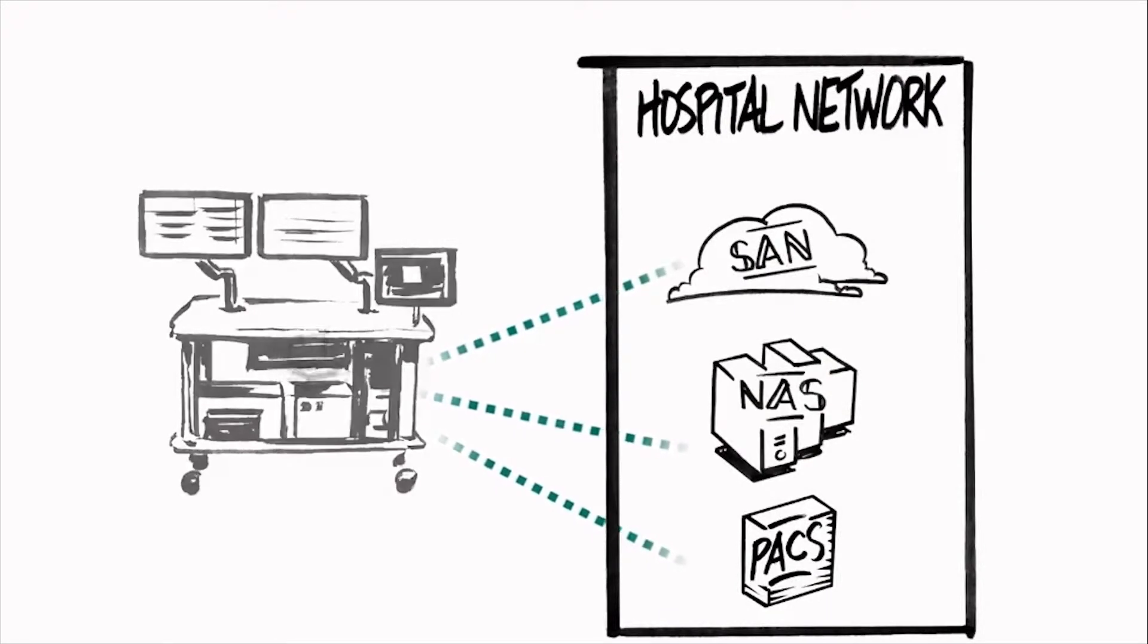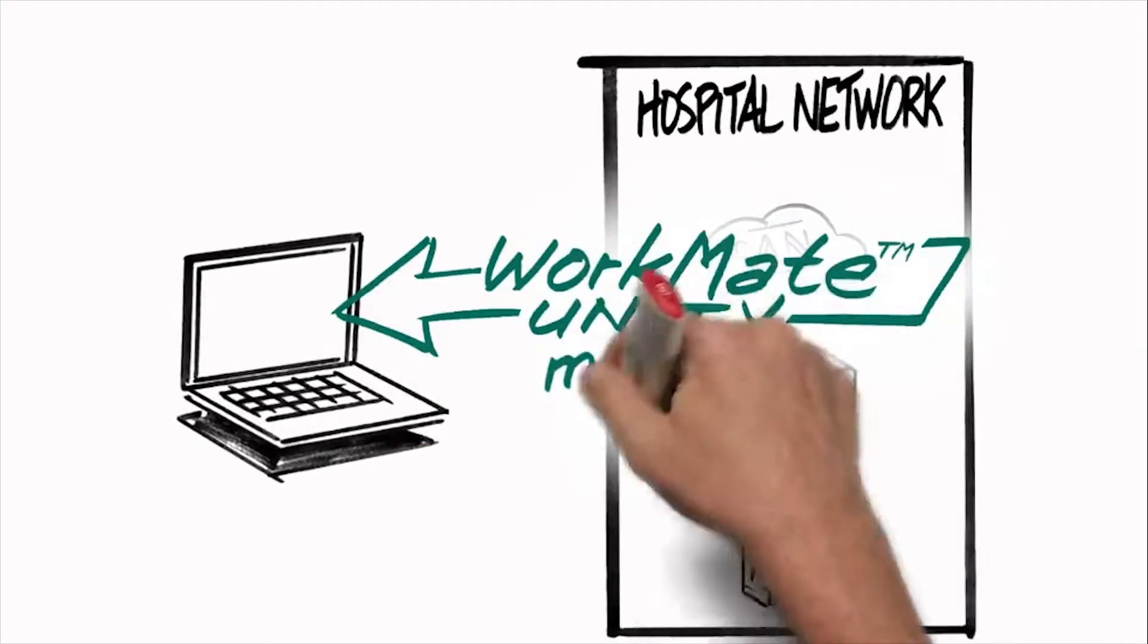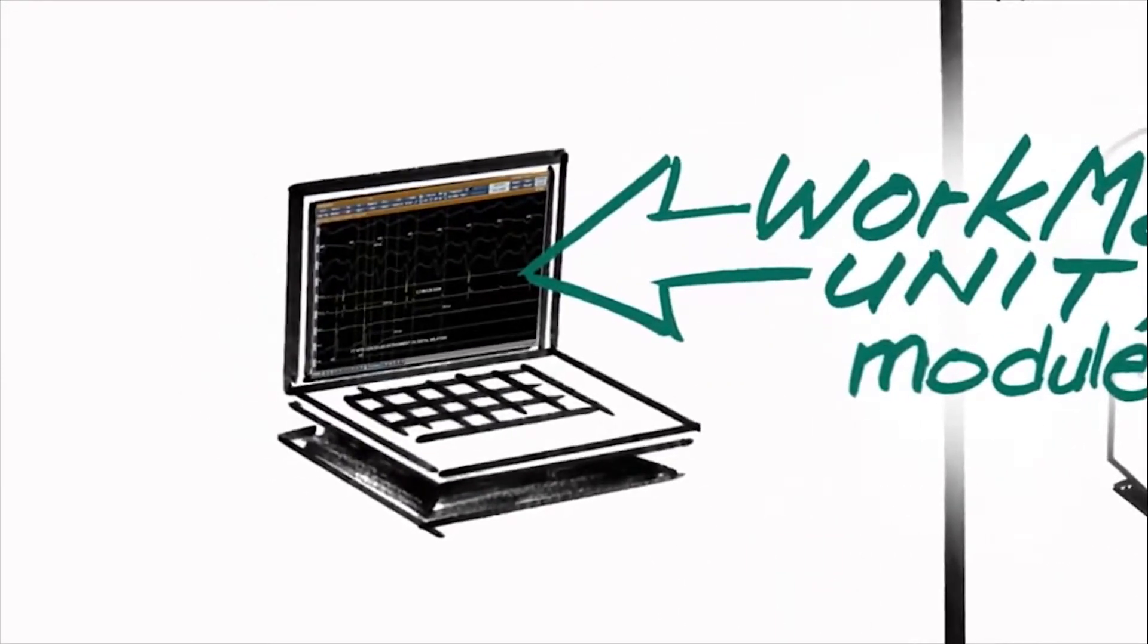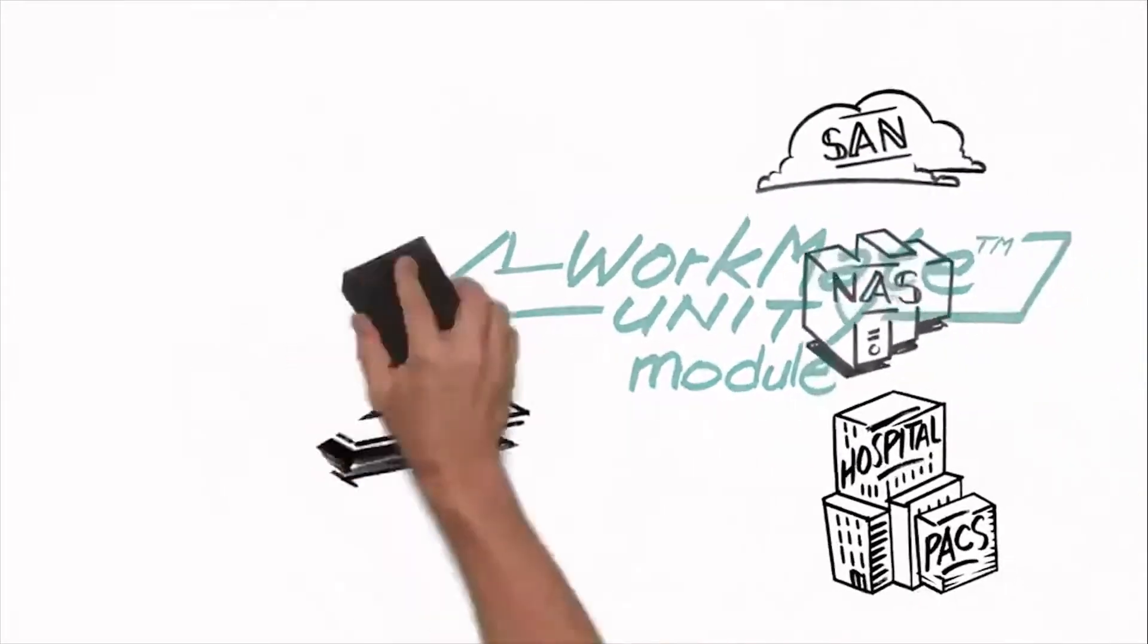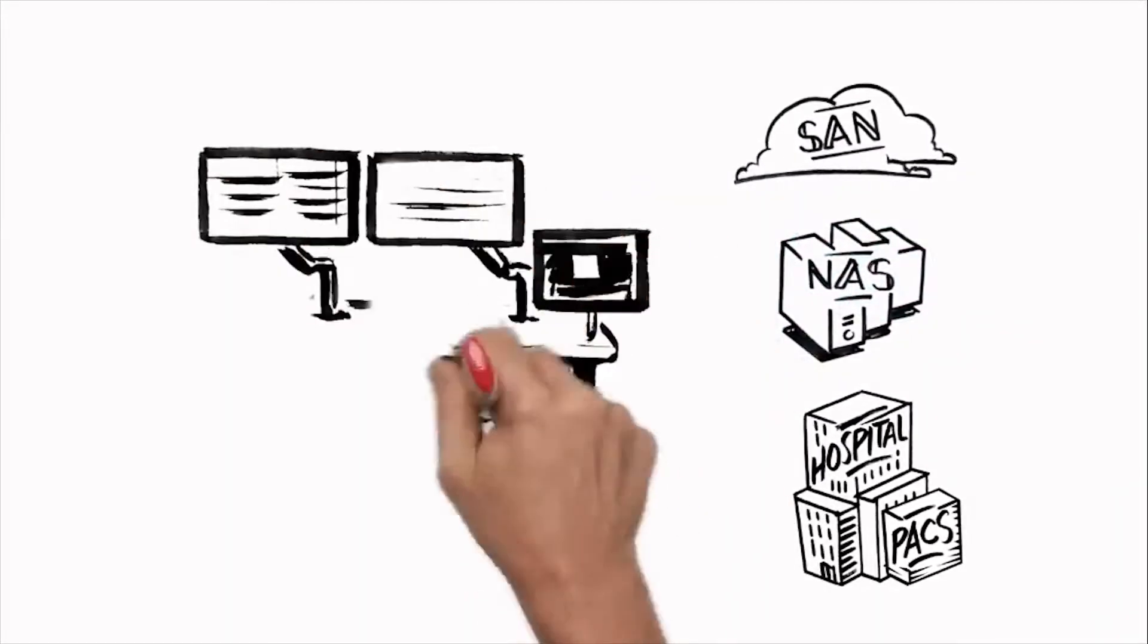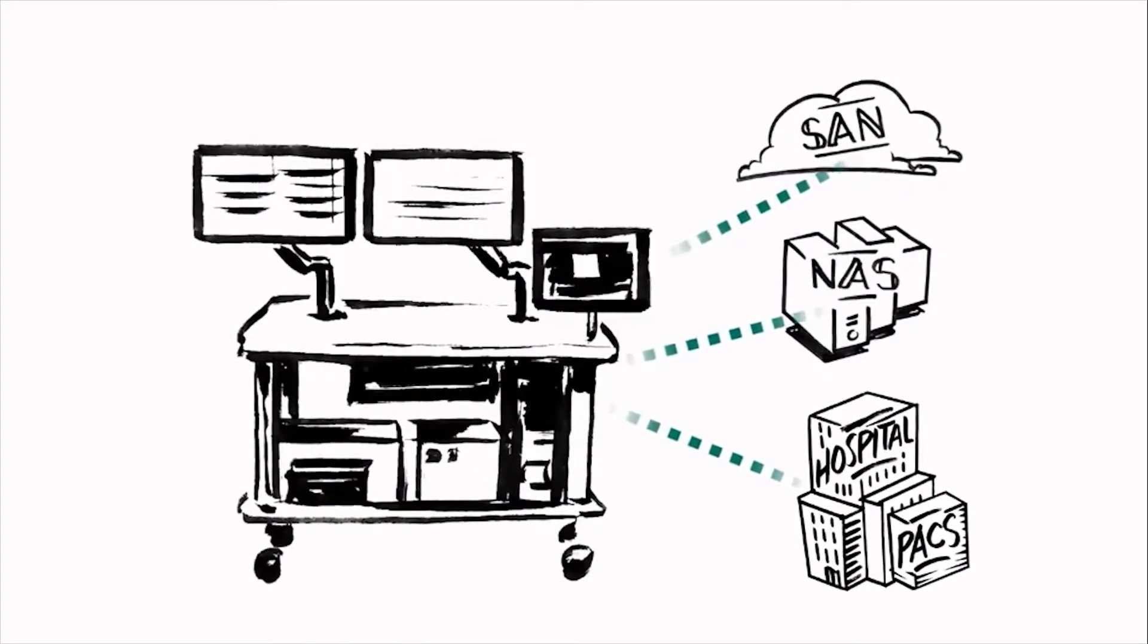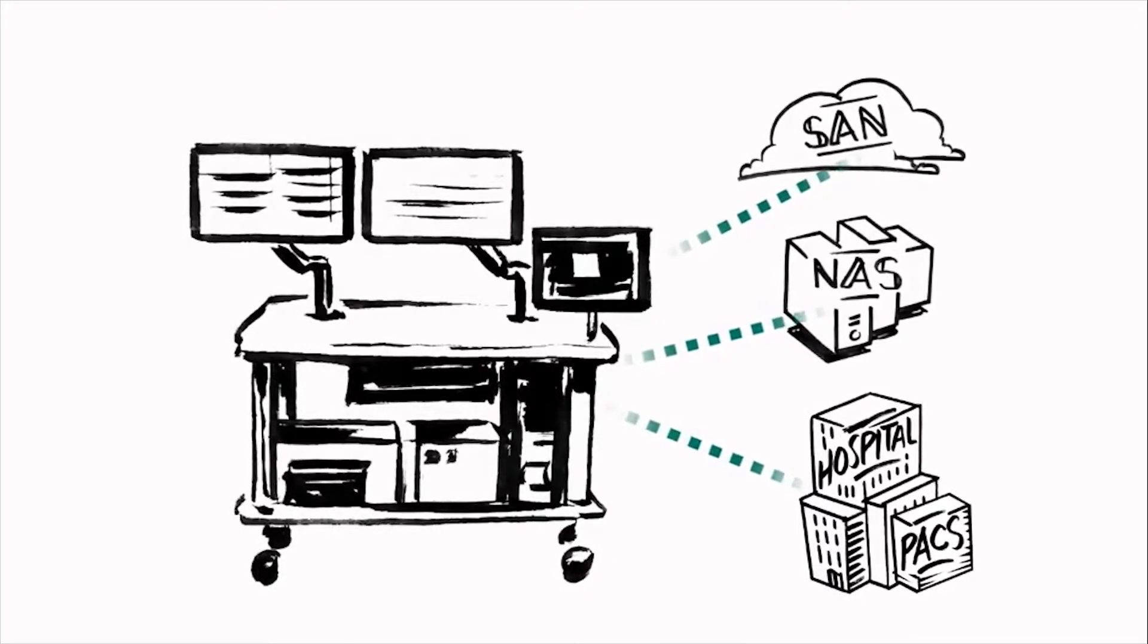Additionally, review can be done remotely via the Workmate Unity review module. Workmate Unity review is a software solution that allows an EP to review a case from any location at any point in time, as long as the computer can access the stored case file. Therefore, a properly installed connection to a PACS system or hospital server can improve automation and workflow efficiencies, making a tangible positive impact to the EP lab.